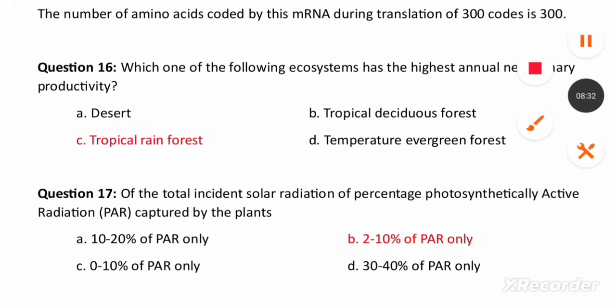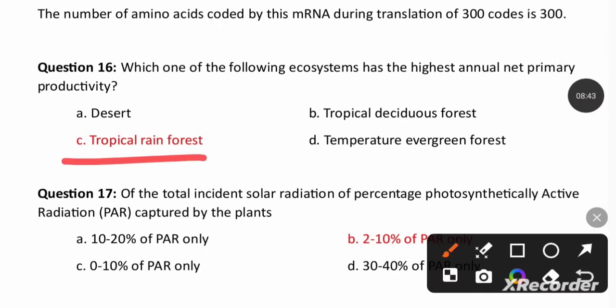Which ecosystem has the highest annual net primary productivity? The answer is tropical rainforests, because they are less seasonal, relatively more constant and predictable, promote niche specialization, and therefore lead to greater biodiversity and higher annual net primary productivity.